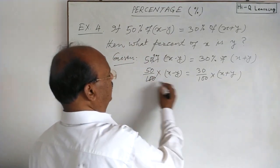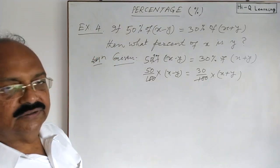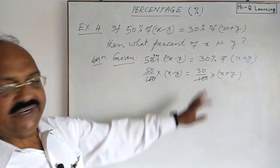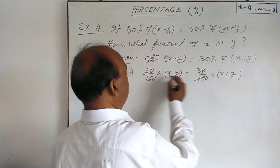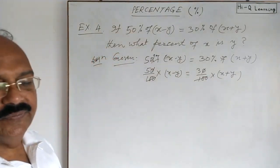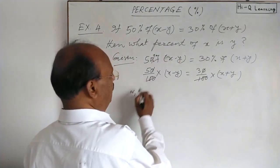Here 100 will be cancelled out from both the sides. 100 is denominator in both the sides. Similarly, these two zeros will be cancelled out from both the sides. So, now simplify.